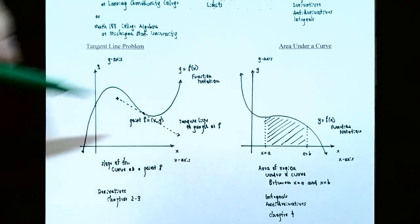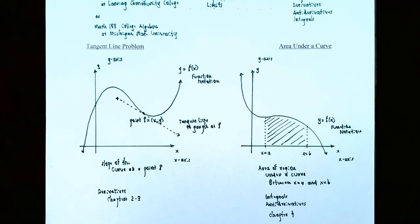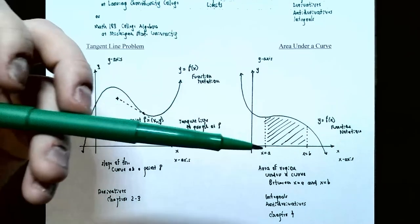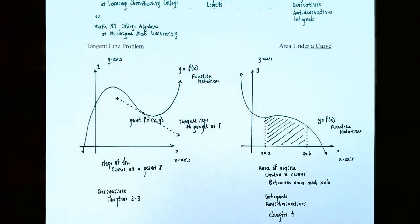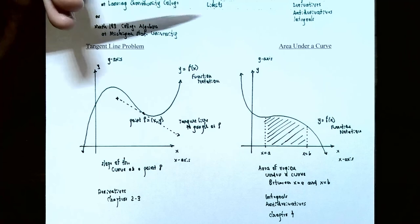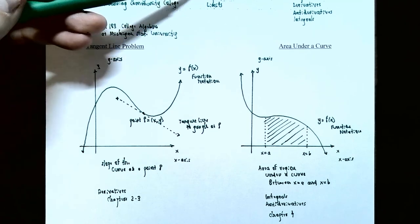So in calculus, there really are only these two problems: the tangent line problem and the area under a curve. In college algebra you study all those variety of functions. In calculus, you apply the tangent line problem and the area under a curve to each of those types of functions — linear, quadratic, polynomial, logarithmic, rational. Before we get to either of those problems, we need the basic concept of a limit. Limits make both of these problems possible using calculus concepts. In the next video, we'll talk about the limit process and what limits are.